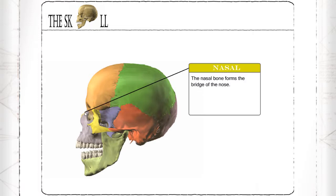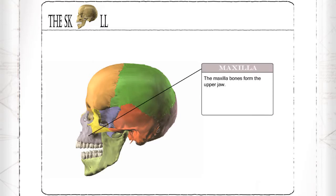Nasal: the nasal bone forms the bridge of the nose. Maxilla: the maxilla bones form the upper jaw.